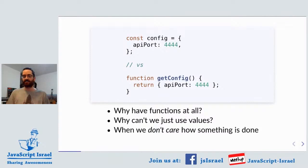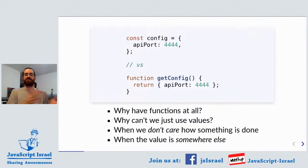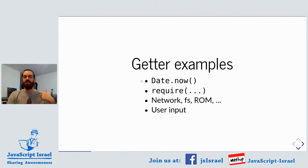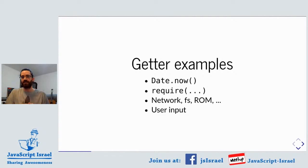In this talk, we're going to focus on two aspects: when we don't care how something is done, and when the value we're talking about is somewhere else. We're going to see examples of that pretty soon. But first, I want to divide functions into two general categories. The first is a getter — a function which returns a value. The second is a setter — a function which receives a value. What are some examples of getters? Date.now is a getter. We can't reach into the system clock without Date.now — we need to ask someone to give it to us. That's the thing about a value somewhere else that is unreachable without some getter.